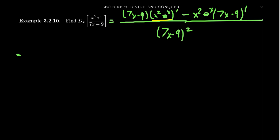This one, we have to combine the product rule with the quotient rule. We use the quotient rule first. Now we're going to use the product rule on x squared times e to the x. So we have 7x minus 9. We take the derivative of x squared e to the x. So what is that going to look like? Well, by the product rule, we're going to take the derivative of x squared, which of course we know to be 2x.